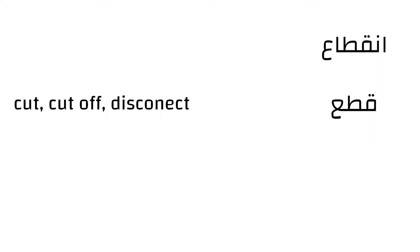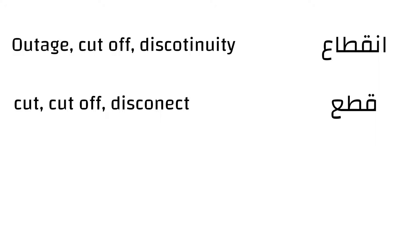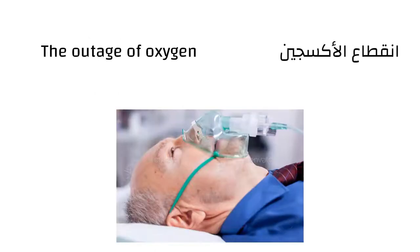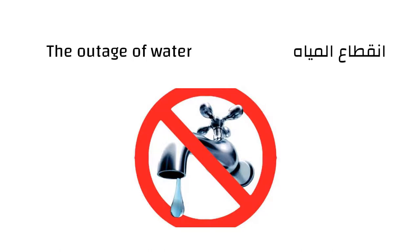The first word is انقطاع. It is a noun and it comes from the verb قطع, which means to cut, to cut off, or to disconnect. So انقطاع means outage, cut-out, or discontinuity. In the title we said انقطاع الأكسوجين, which means the cut-out of oxygen or the outage of oxygen — there was oxygen before and now it's gone. Another example: انقطاع المياه means the outage or cut-out of water — there was water before and now there is nothing.